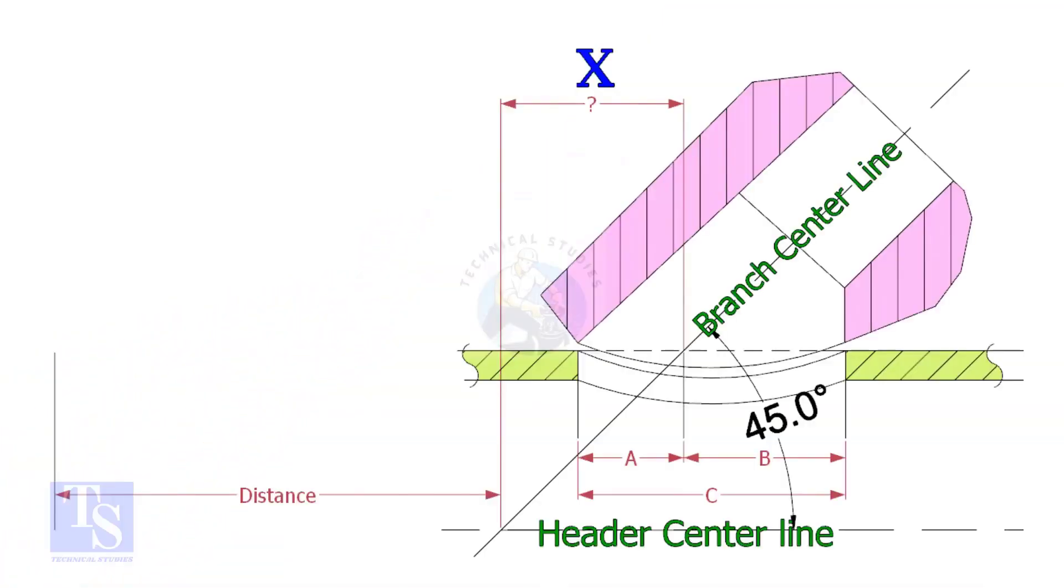Most commonly, laterolettes are used for 45 degree branch connections. In a drawing, the distance to the center of a laterolette is given from a certain point. This distance is actually on the center of the header pipe. By applying a simple calculation, we can find the actual center that comes on the top of the pipe.